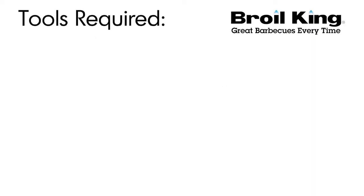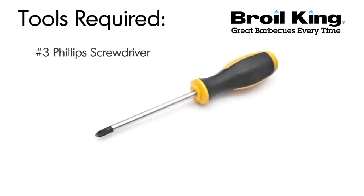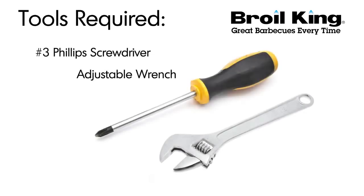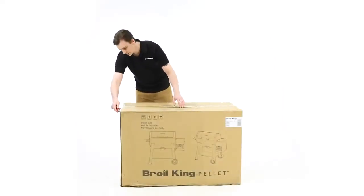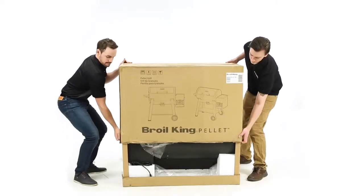You will need the following tools to assemble your Broil King pellet grill: a number 3 Phillips screwdriver and an adjustable wrench. Before starting, unpack all of the components of your smoker and lay them out in your workspace.